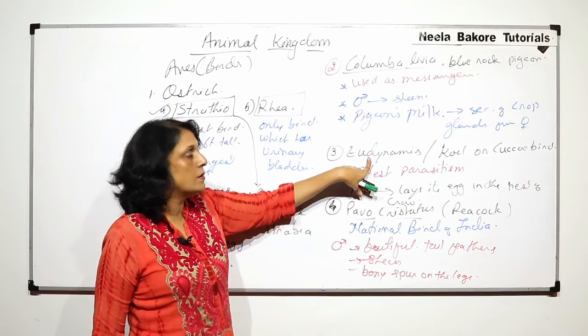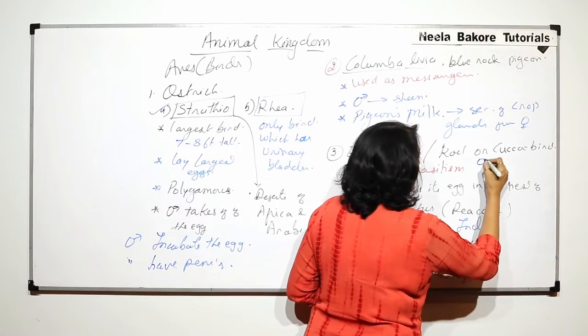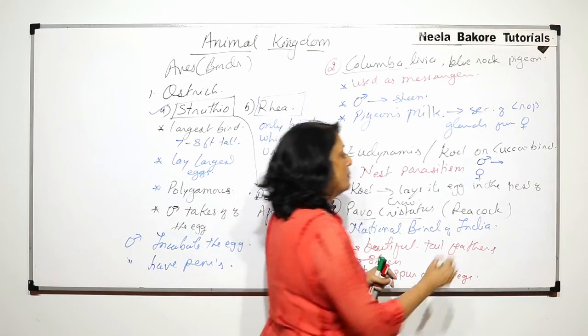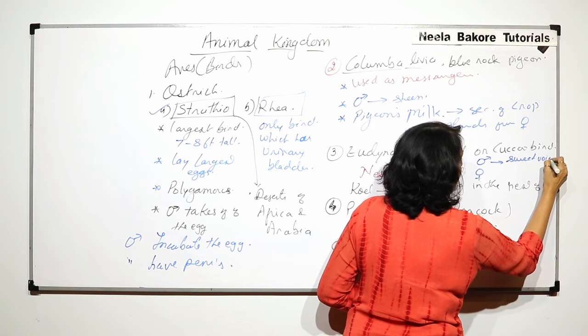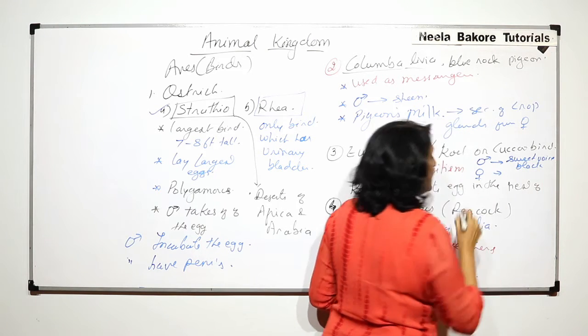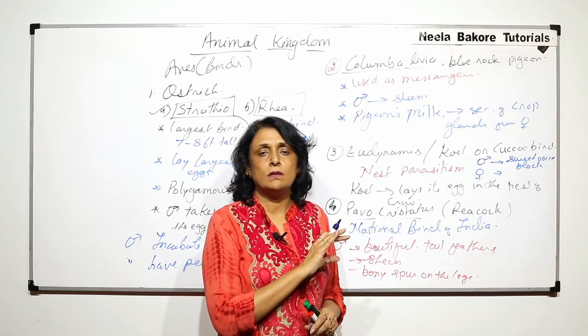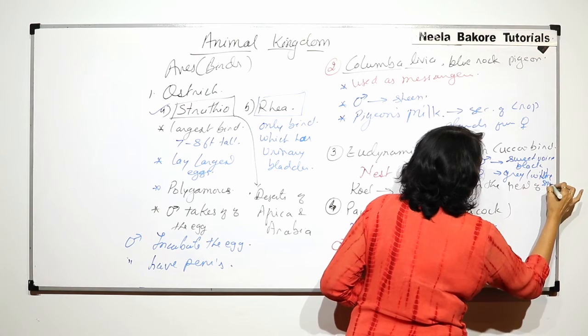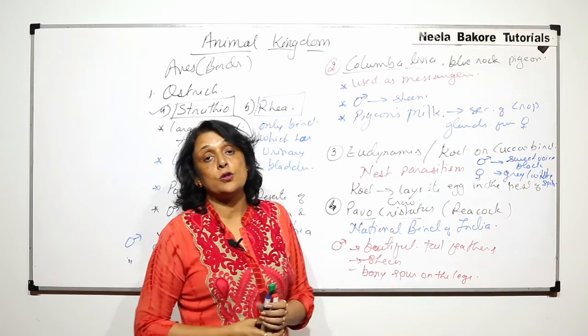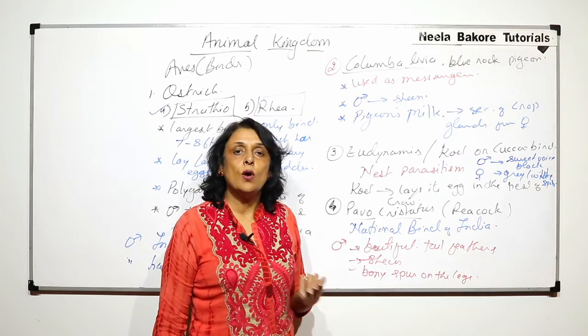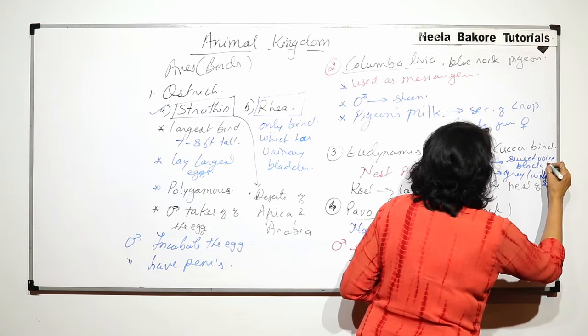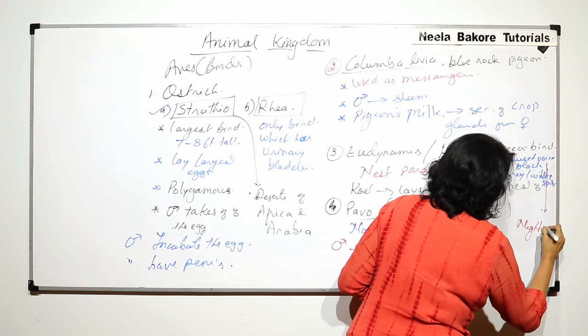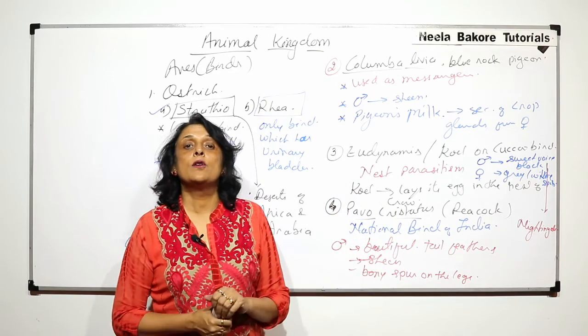Now, coming back to this cuckoo bird, we have to also understand the difference between the male bird and the female bird. The cuckoo bird which sings is the male bird. It has sweet voice and it is black. Whereas the female is greyish or with spots. So it has grey body with white spots and its voice is not at all good. We can say it is irritating voice which the female has. And the male bird is known as the nightingale. It is called the nightingale because of the voice.